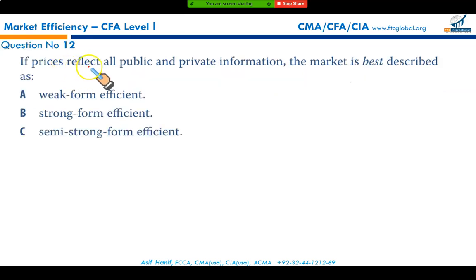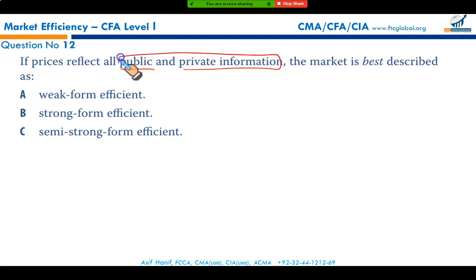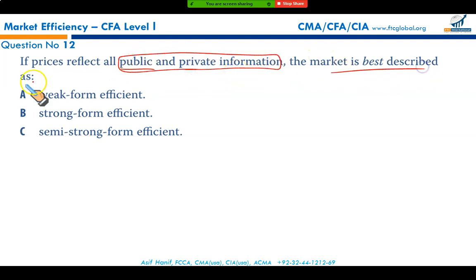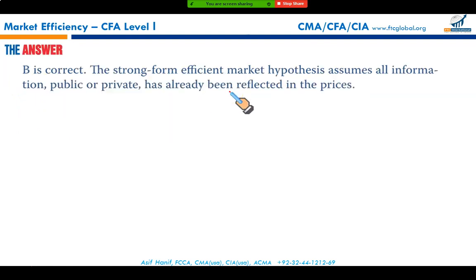If prices reflect all public and private information, the market is best described as strong form efficient. Option B is the correct answer.